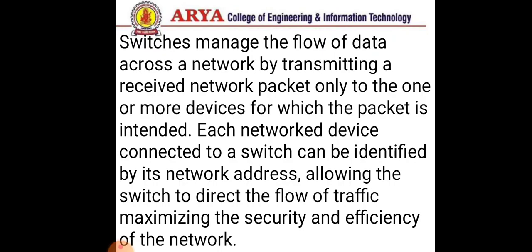In a network, switches use three methods to transmit data: store and forward, cut-through, and fragment free. In a cut-through switching environment, the packet begins to be forwarded as soon as it is received. This method is very fast but creates the possibility of errors being propagated through the network, as there is no error checking.